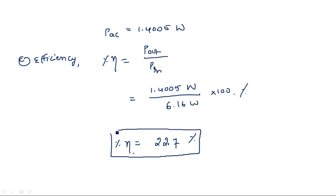After simplification the efficiency eta is equal to 22.7 percent. This means 22.7 percent efficiency in transmission from input to output through the reflex klystron. In this way we can calculate the input power, output power, and efficiency.